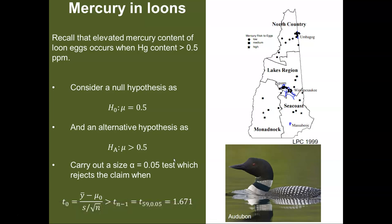is some value where if we look up the value for t with 59 degrees of freedom and a level of significance of 0.05, it is equal to 1.671.